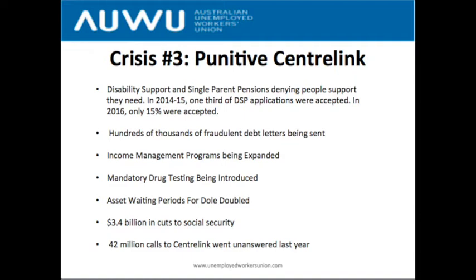Another major attack is how difficult it is to contact Centrelink. The latest data shows 42 million calls to Centrelink went unanswered in one financial year — a complete failure of the social security system. This has been very deliberate. The CPSU, the union representing Centrelink workers, has stated that 5,000 staff were cut from Centrelink and related services within about a five-year period — a huge reduction given the growing population and increasing call volumes.